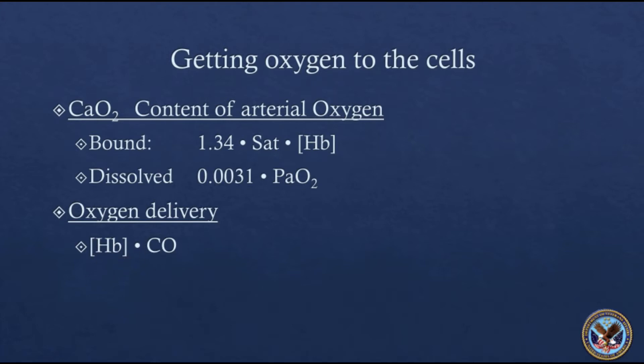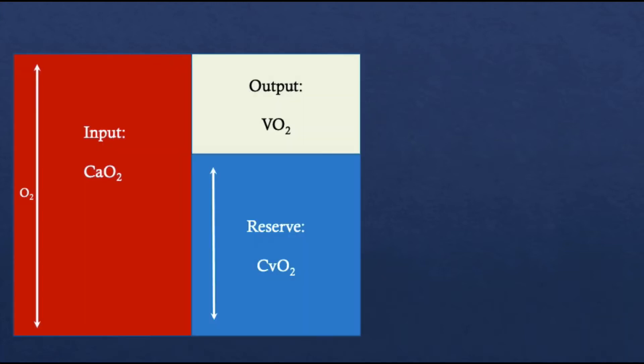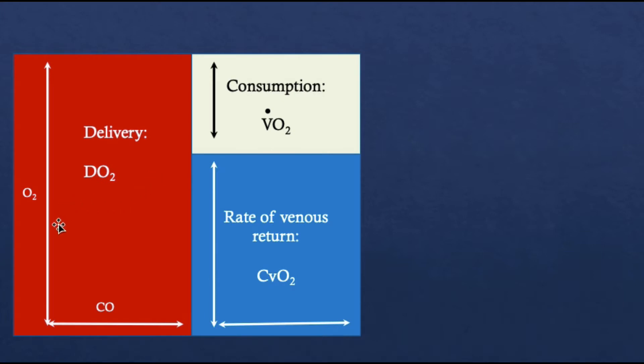Looking at the whole body perspective, we have an input variable which is the content of arterial oxygen. You have how much is being consumed, which we call VO2, and there's the reserve, which is the mixed venous blood. When you start the circulation in motion, these terms change a little bit. The input becomes delivery because now you have cardiac output. Consumption is a per minute consumption—liters per minute—so that becomes VO2. When you hear that term used in this talk, you'll know that's a dynamic term of consumption. Then you have the rate of venous return, which is basically what's left over.